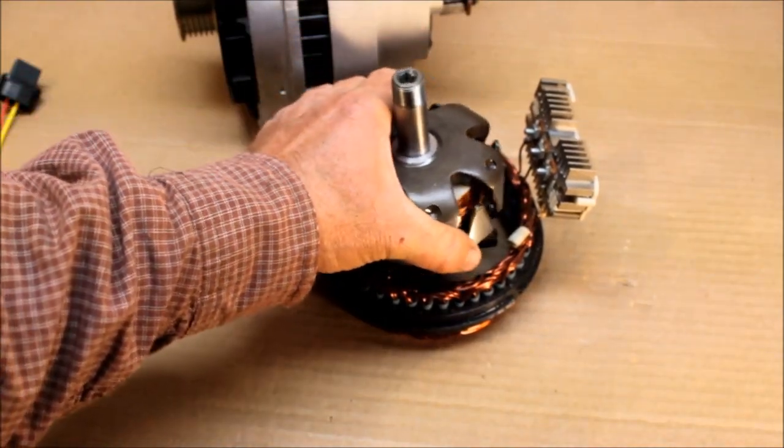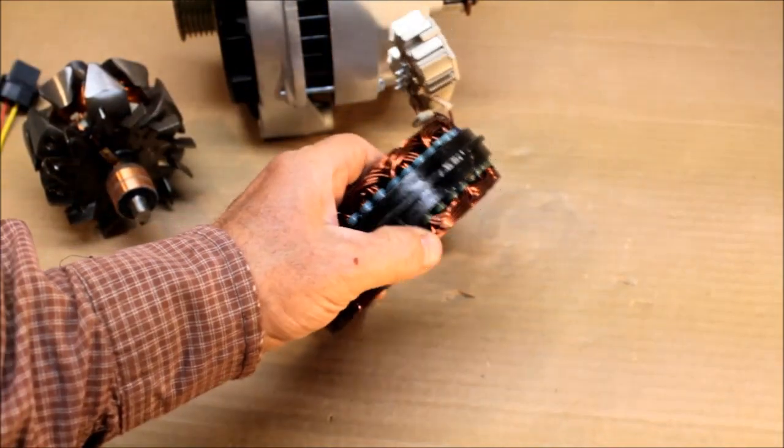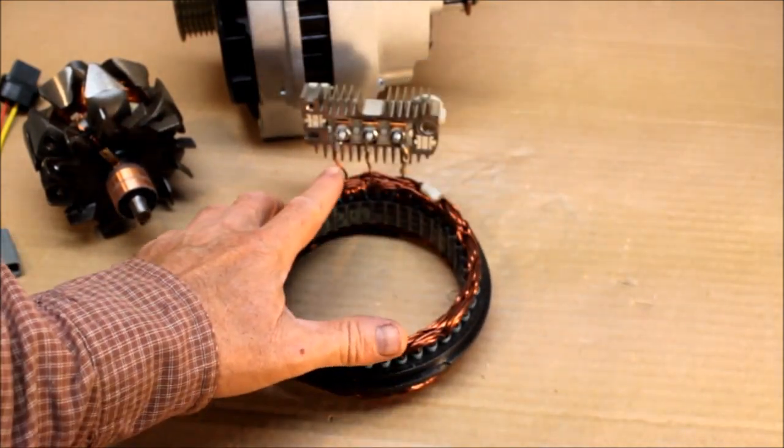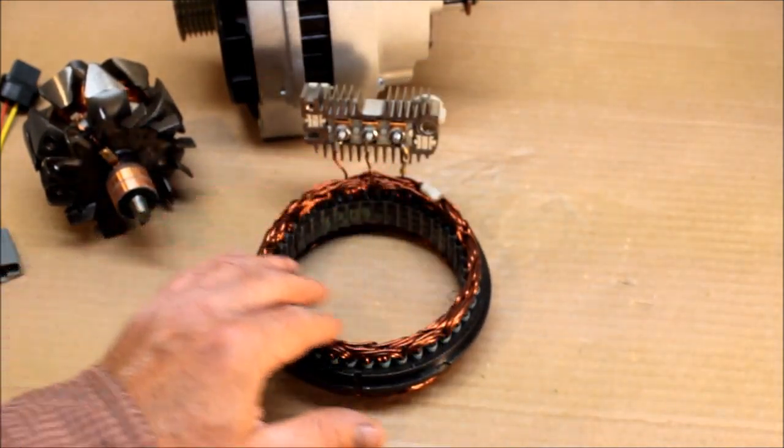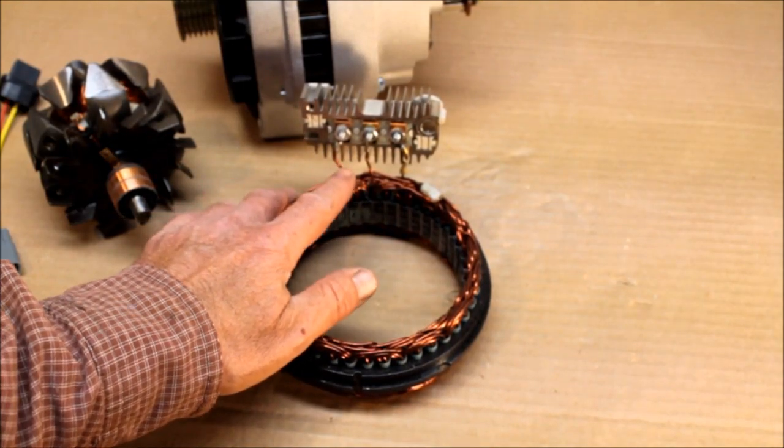That AC power comes out through these three leads. Automotive stators are basically three-phase. When I say three-phase, it means these wires are connected to three different sets of windings inside the stator.